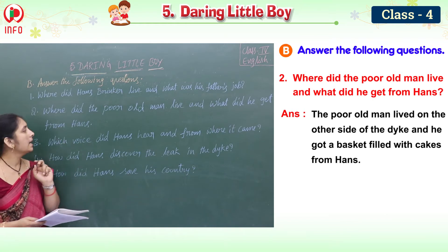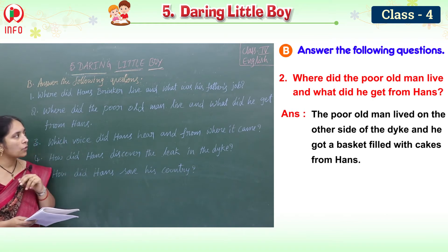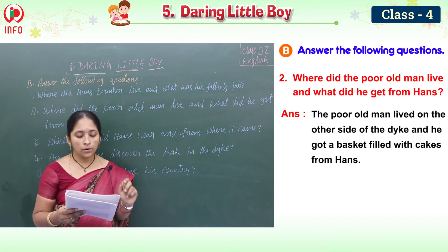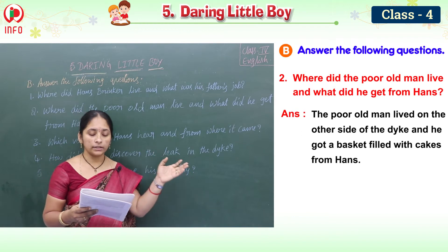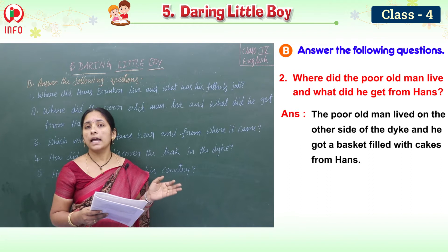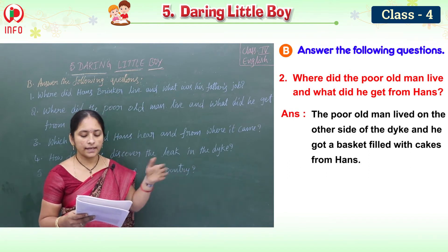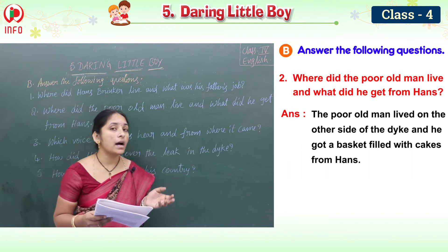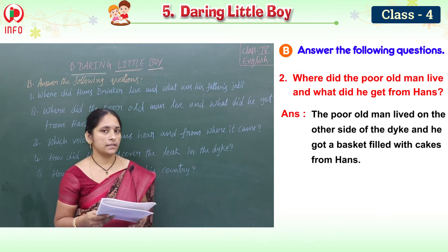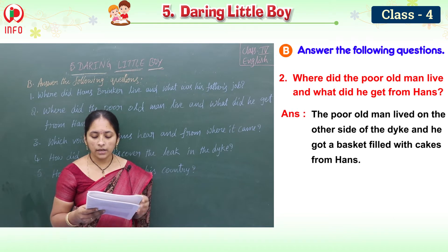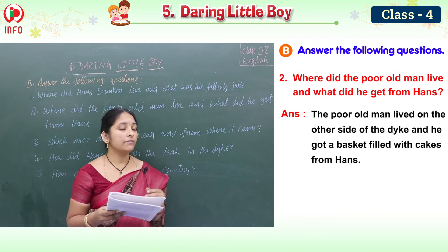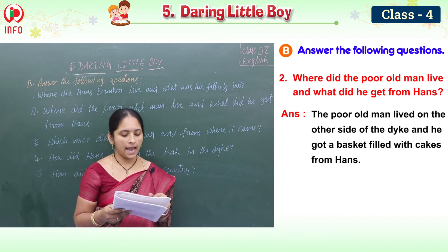The second question: where did the poor old man live and what did he get from Hans? The poor old man lived on the other side of the dike, and he got a basket filled with cakes from Hans.